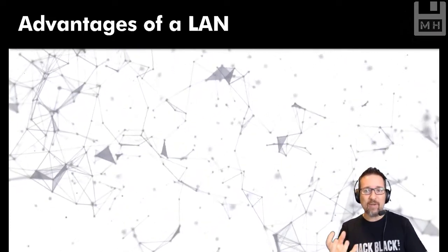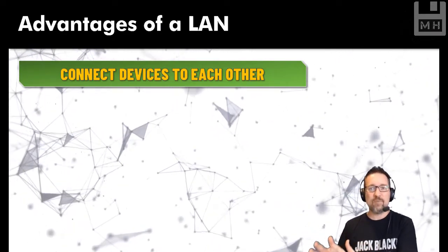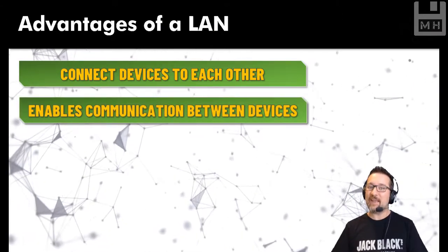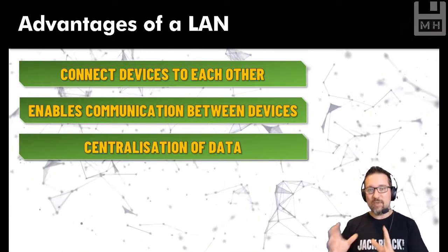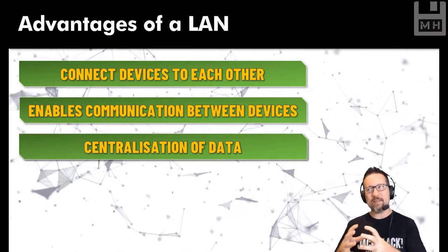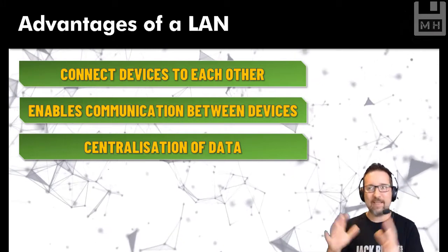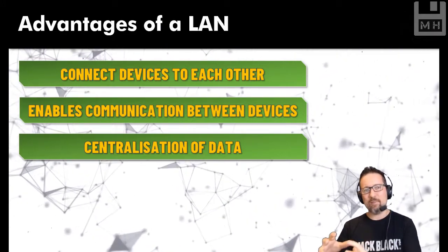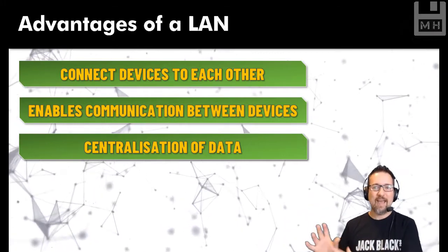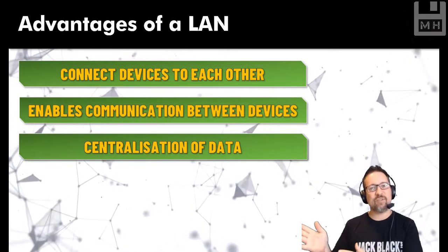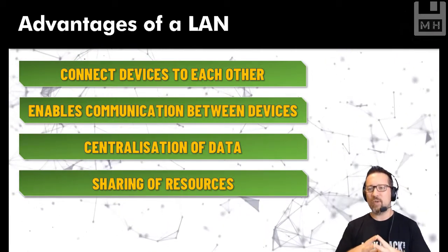What are the advantages of having a local area network? First of all, all your devices connect to each other — they're no longer standalone machines. Communication is enabled across all the machines and we can share information and resources, and we can centralize our data. Centralization of data means all your files, folders, pictures, videos and work are stored in a central location like the server, and you can log on to any machine on the network and access your stuff.